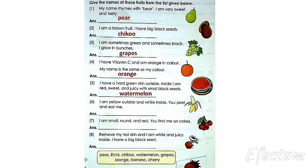Number 6: I am yellow outside and white inside. You peel and eat it. The answer is banana. Number 7: I am small, round and red. You find me on cakes.